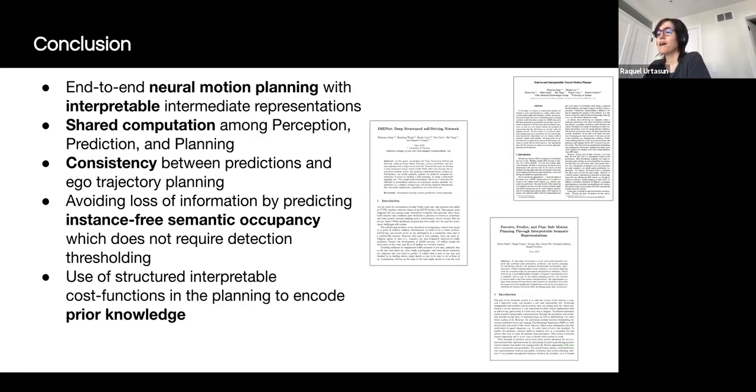To summarize, we have explained how we can learn end-to-end motion planners that can directly output trajectories, directly from the raw sensor data, with intermediate representations for perception and prediction. This enables shared computation among the different tasks of the autonomy pipeline and ultimately decreases the reaction time of the SDV. Moreover, we show that our models can plan trajectories for the ego vehicle that are consistent with the predictions for the other agents in the scene by taking this into account in our motion planning costs. On top of that, we propose an instance-free semantic occupancy representation that avoids information loss between perception and downstream tasks by removing the need of discrete decisions such as thresholding or NMS in object detection. Finally, we have shown that we can still make use of interpretable cost functions in the planner that encode our prior knowledge about driving and are interpretable. This is an extremely exciting direction of research. And I hope that many of you will be working on this in the future. Thank you.